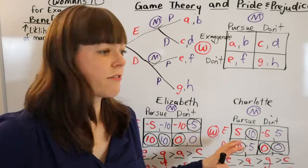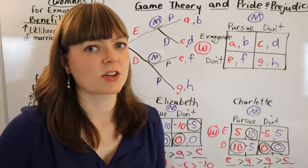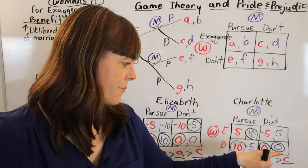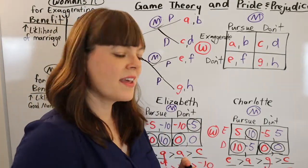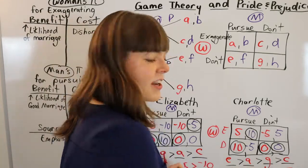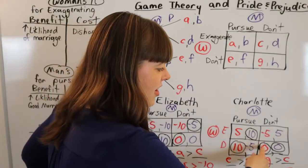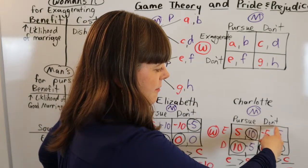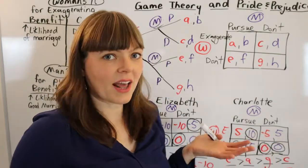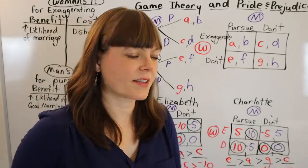And I wanted to do that by changing as few payoffs as possible, given that I thought I had pretty good intuition to begin with. And I noticed if I could actually get her to switch from don't exaggerate to exaggerate for this box, that would actually do the trick. So I want to ask the question, can I come up with a scenario where if the man doesn't pursue, she prefers to have exaggerated rather than not exaggerated.